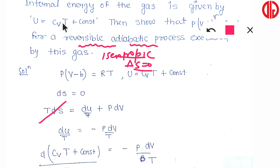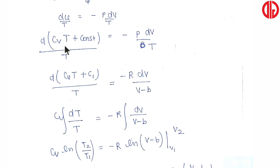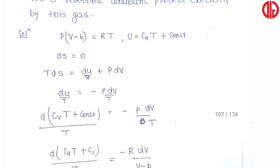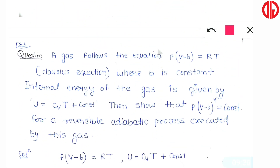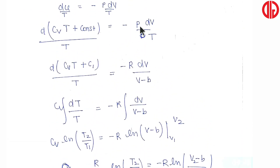Now we substitute the expression for u. Since u = cv·T + constant, we get du = cv·dT. So the equation becomes cv·dT/T = −p·dv/T. From the gas equation p(v−b) = RT, we can find p/T = R/(v−b). Substituting this: cv·dT/T = −R·dv/(v−b). Now we integrate both sides.